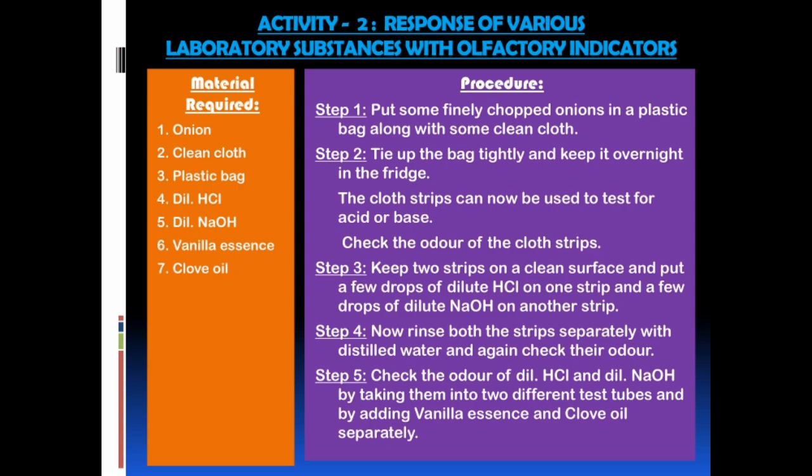Stepwise procedure. Step 1: Put some finely chopped onions in a plastic bag along with some clean cloth. Step 2: Tie up the bag tightly and keep it overnight in the fridge. Step 3: Keep two strips on a clean surface and put a few drops of dilute HCl on one strip and a few drops of dilute NaOH on another strip. Step 4: Rinse both the strips separately with distilled water and again check their odor.